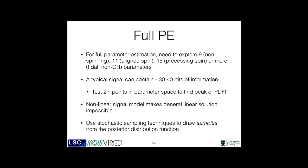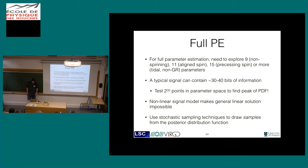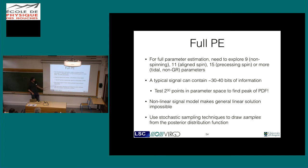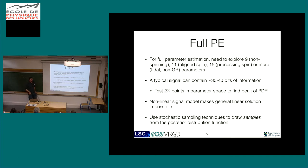Moving on to the full parameter estimation - that's what we're going to be talking about for most of the rest of the lecture. This is now looking at exploring the full parameter space: either nine parameters if you ignore spins, 11 if you have an aligned spin model, 15 if you have the full precessing spin, or more if you want to include non-GR or tidal parameters. You can quantify the amount of information in this data - the result is that there are roughly 30 to 40 bits of information about the source.